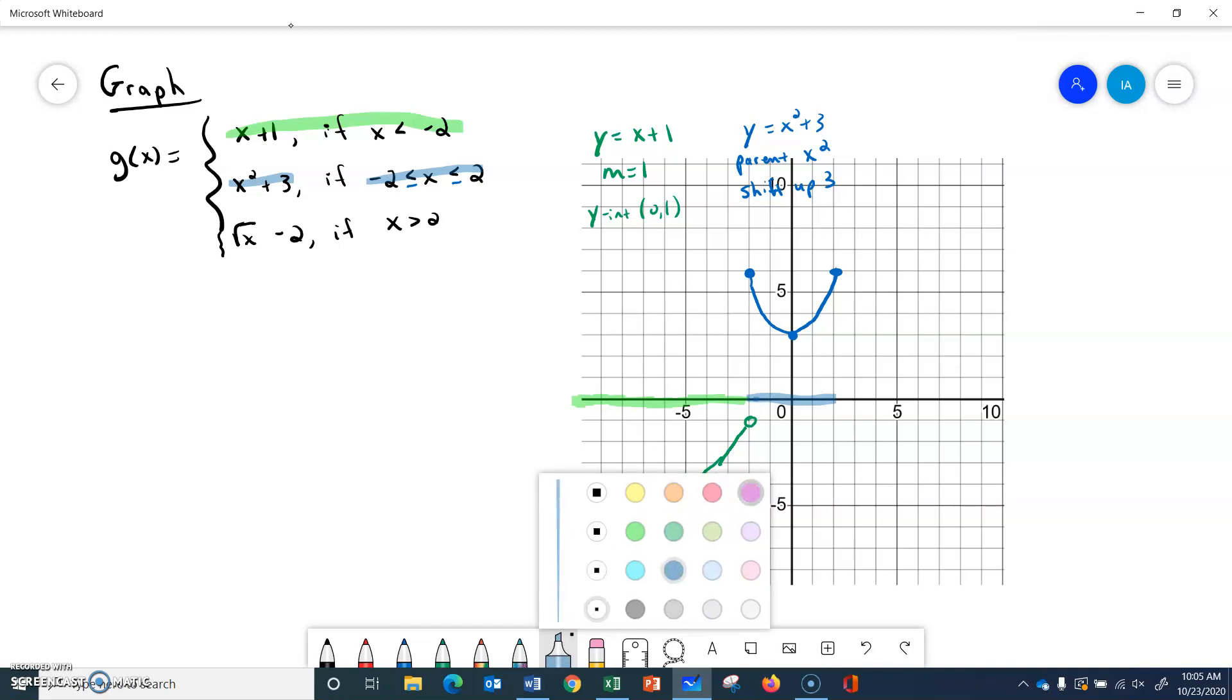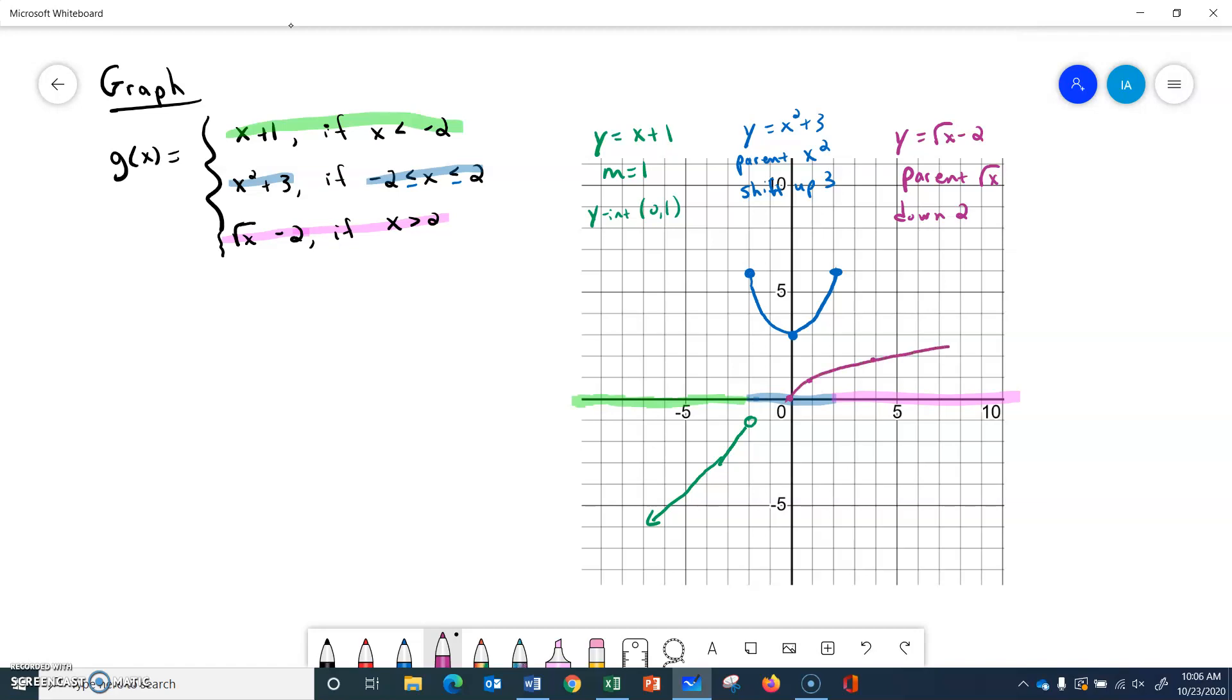The third piece is square root of x minus 2, and that is when x is greater than 2. So greater than 2 is over this way, to the right of 2. We're doing square root of x minus 2. So that is a parent of... Excuse me. The square root function starts at 0, 0, and comes out looking like this. But now we've got to move it down 2. So let's do that. Let's move it down 2.